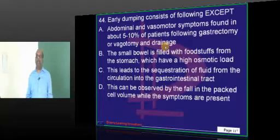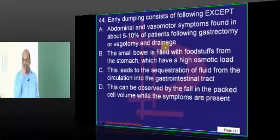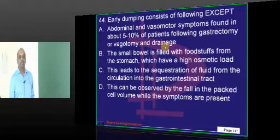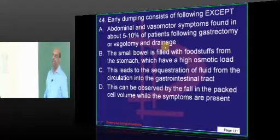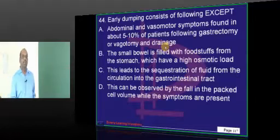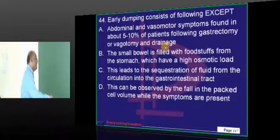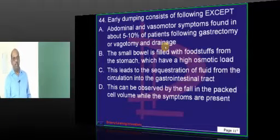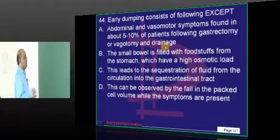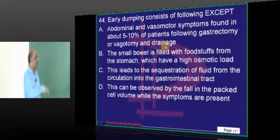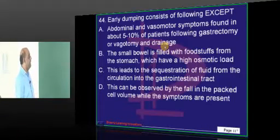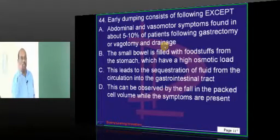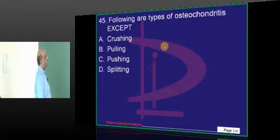In early dumping syndrome, what the patient eats will jump straight into the duodenum. Being osmotically active, it drags water from the plasma into the gut. The plasma then becomes concentrated. The important sign of concentrated plasma is not a fall in packed cell volume — it is a rise in PCV, which you basically come across.